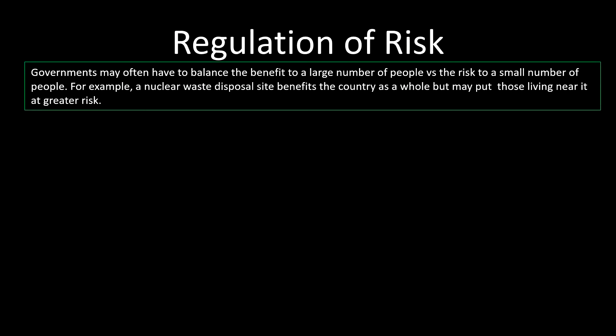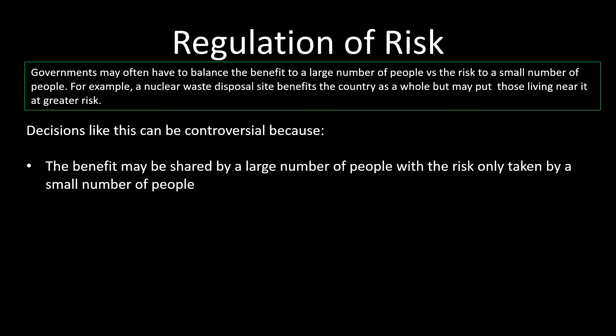Finally, the regulation of risks. You need to know a little about how governments deal with this — the idea that they have to balance the benefits to a large number of people versus the risks to a small number of people. The example given is a nuclear waste disposal site. If you have nuclear power stations, you have to dispose of the waste somewhere. That benefits the country as a whole, but it might be a slight increased risk to people living nearby. These decisions are often controversial because the benefit might be shared by a large number of people while the risk is only taken by a small number.